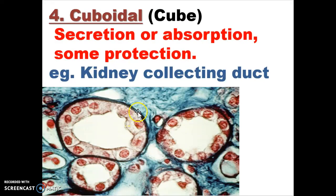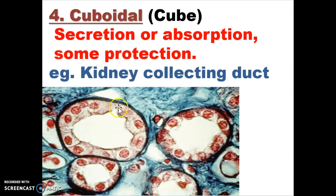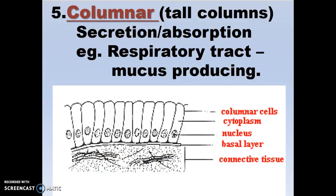Cuboidal means cube-shaped. This is a differential stain — the cuboidal cells stained red and the connective tissue stained blue — so you can really see these nice little ducts. They're made of simple, one layer, cuboidal, cube cells. Here's a kidney collecting duct. Columnar means they look like tall columns — pretty straightforward. They're good for secretion or absorption. Your respiratory tract, goblet cells, mucus neck cells — they're all long and columnar.